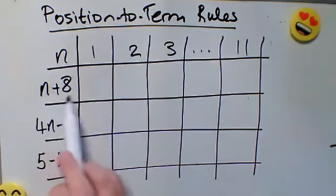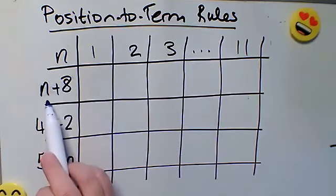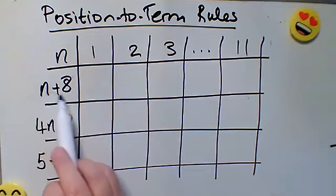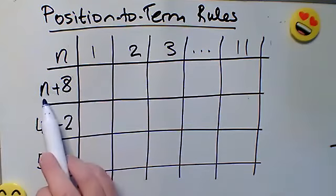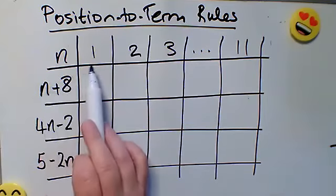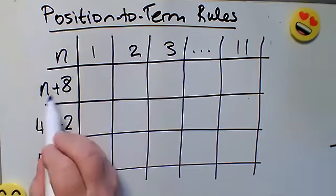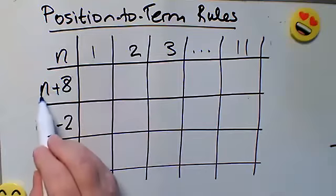So this is the sequence of n plus 8, so we'd call this the nth term of the sequence. And to work out what each position in the sequence, the value of each position, I simply substitute in the position in the sequence in place of the n.